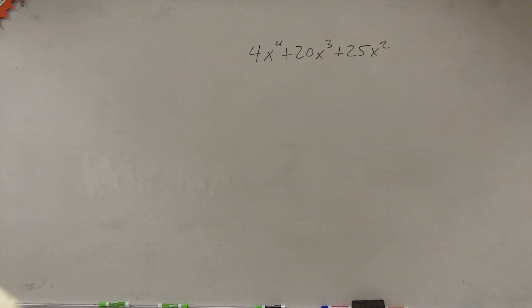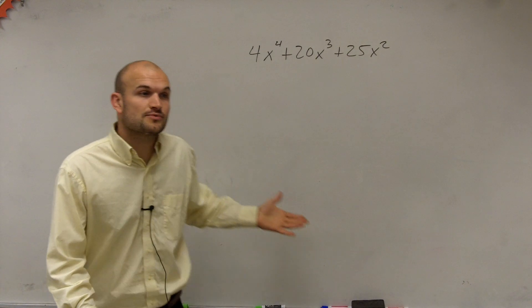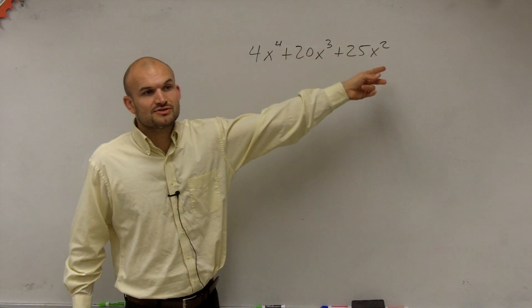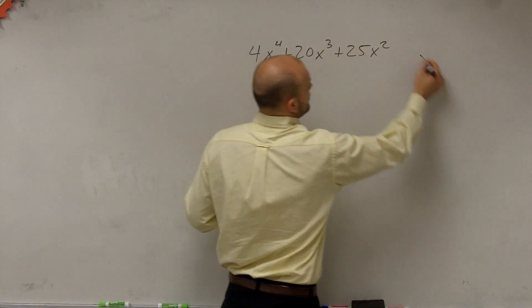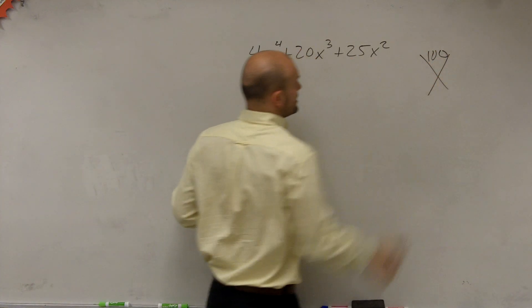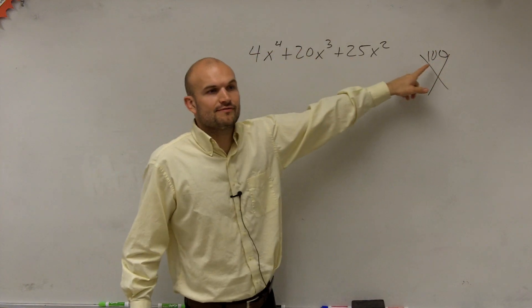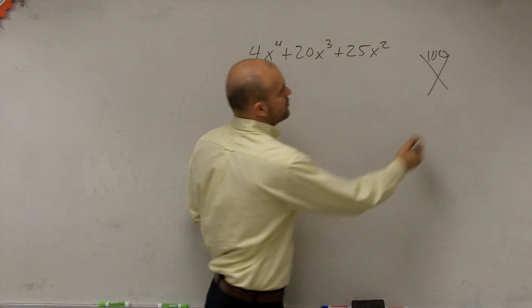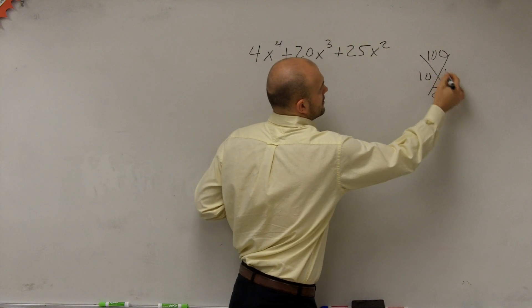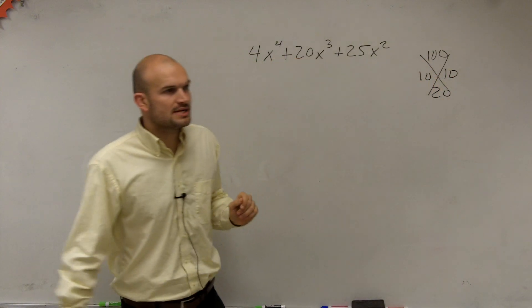All right. So this problem is going to be very similar to the one that I just went over. We could do the 4 times 25, which would give you 100. And then you say, what two numbers multiply to give you 100 that add to give you 20? And your two answers would be 10 times 10.